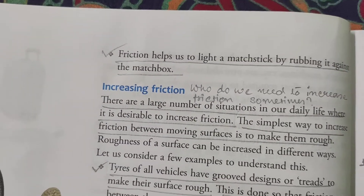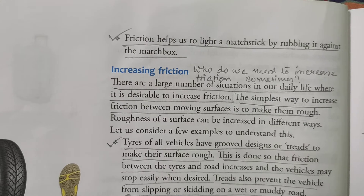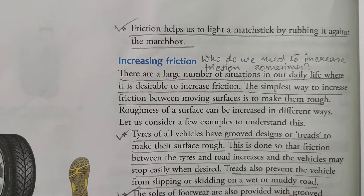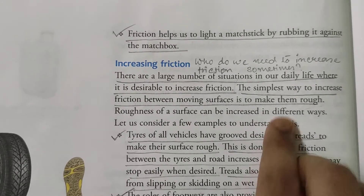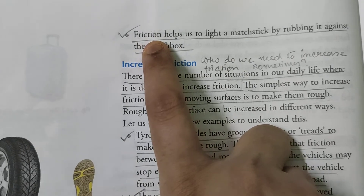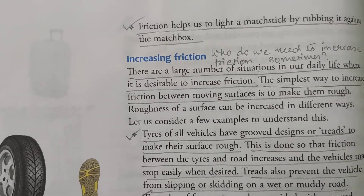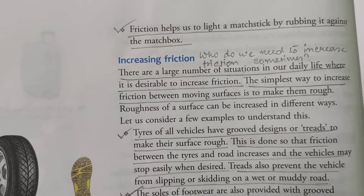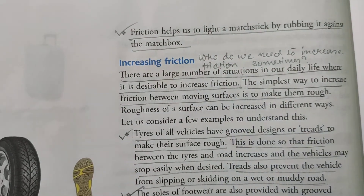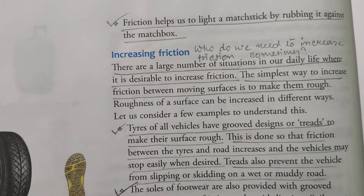Another interesting example: a matchstick. When we light a matchstick by rubbing it against a matchbox, friction is developed because one surface is rubbed against another. As we learned, friction produces heat, and if there is a lot of friction it can also produce light energy. The matchstick is made in such a way that even a very small amount of heat energy produced can easily make it catch fire.